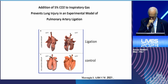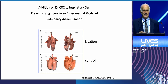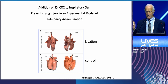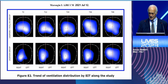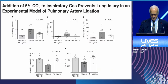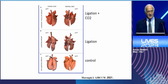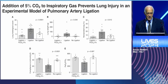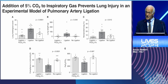We repeated the experiment in pigs. We ligated the left pulmonary artery of the pig, and as you can see, against control, both the right and the left lung develop ARDS and hemorrhagic pulmonary edema. But when we ventilate with 5% CO2, the left lung — which is not perfused — comes out very good, and the right lung is also protected.